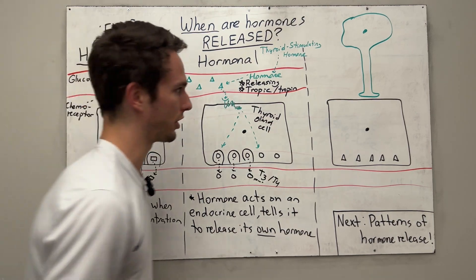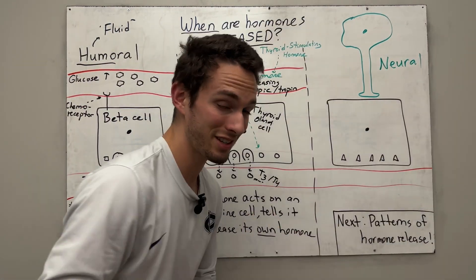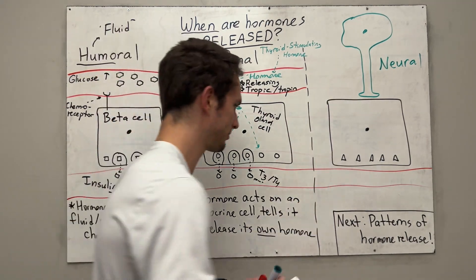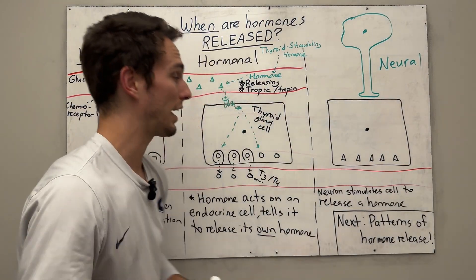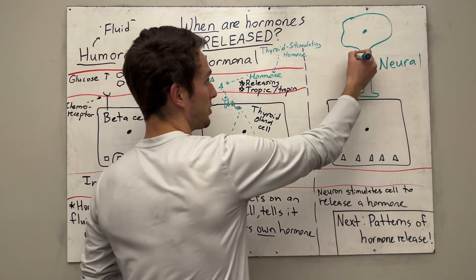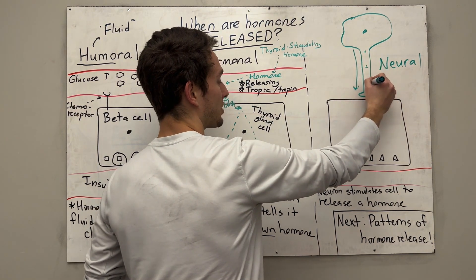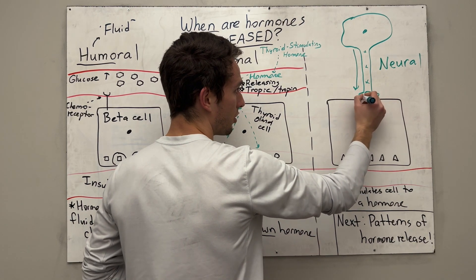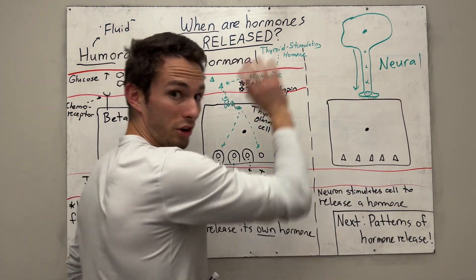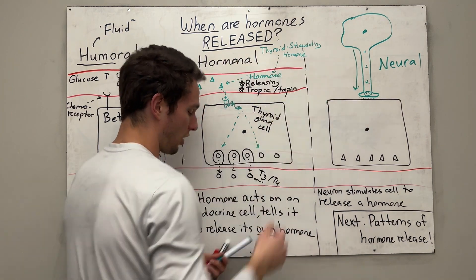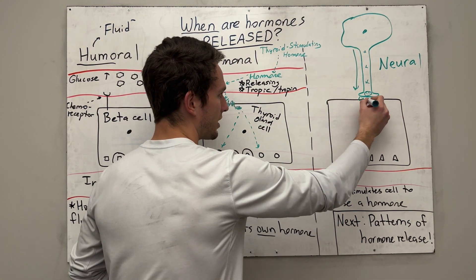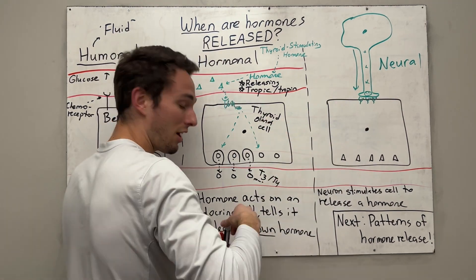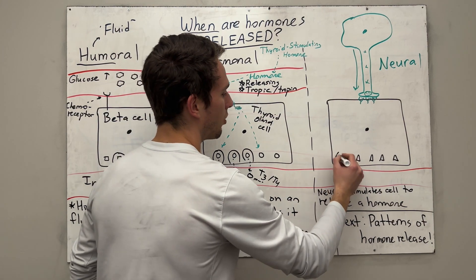Now the last one is called neural control. This is simply when a neuron communicates with an endocrine cell to tell it to release its hormone. The way it does that — as all neurons do — is it sends an action potential, a flow of positive charges, down the axon, terminating where it will release chemicals called neurotransmitters into the space called the synapse. Those neurotransmitters will then be detected by the cell with chemoreceptors, and it will tell that cell to release its hormone into the bloodstream.